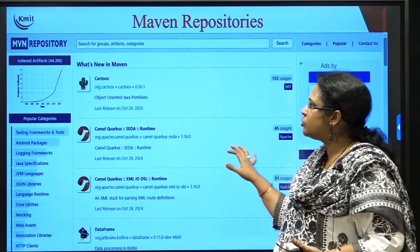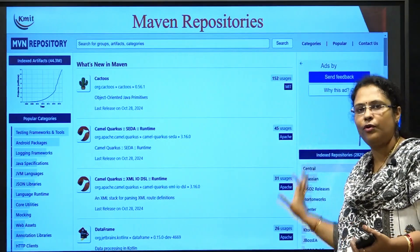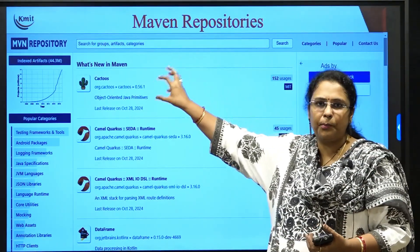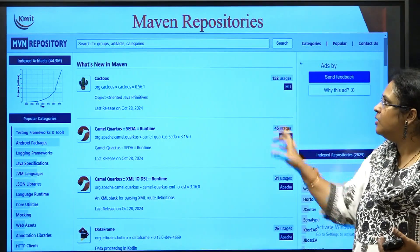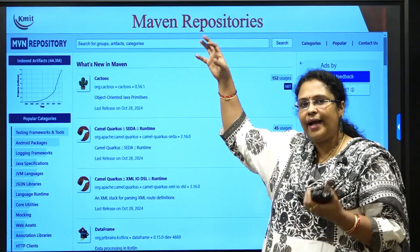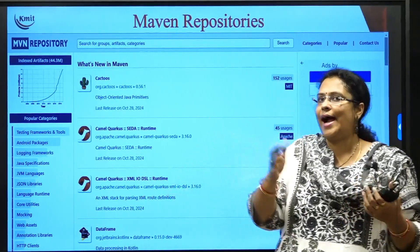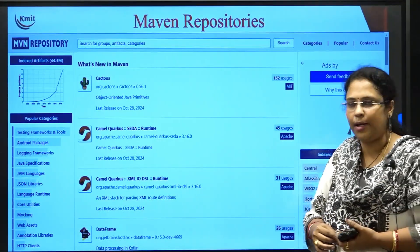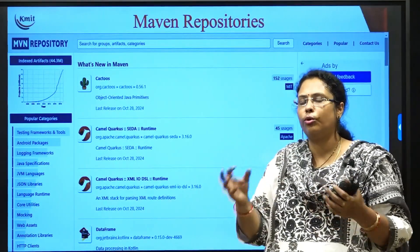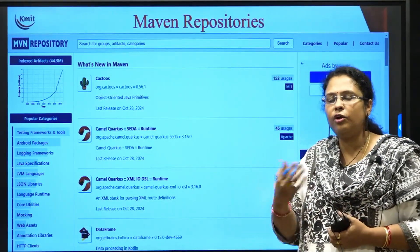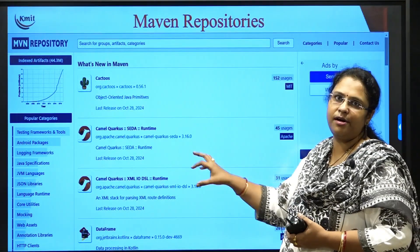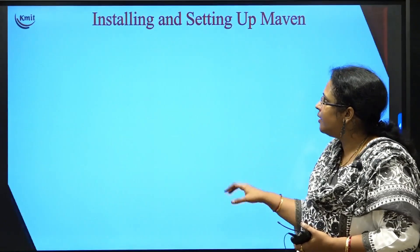Let me give you a glance of how your central library of Maven will actually look like. This is your Maven repository and this is the central. Whatever you want, you can search here manually, get that copy of that library, and add it to your pom.xml file. How all this happens, we will show you in hands-on in your lab sessions. This is basically your central repository of Maven.